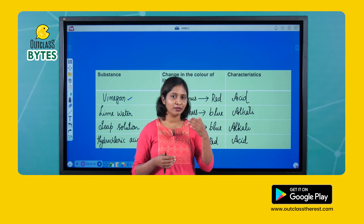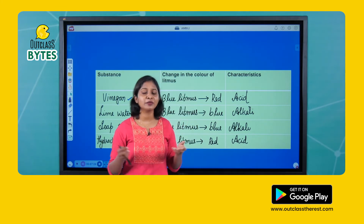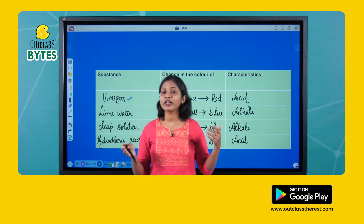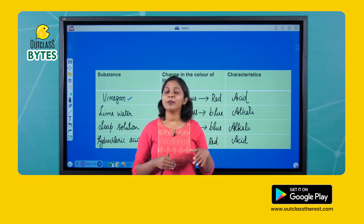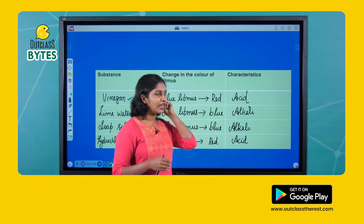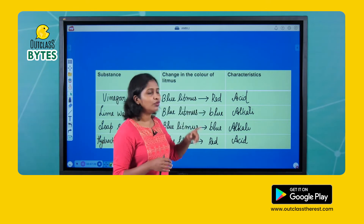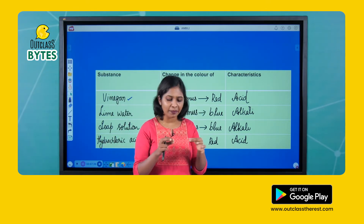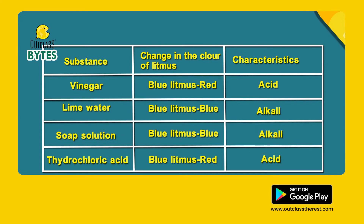Let's talk about it in this class. What do you think of vinegar? It's a sour taste — obviously it's acid. Blue litmus turns to red. You can dip the litmus paper; if you dip it, blue litmus turns to red. Then you can confirm it is acid.